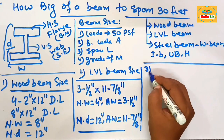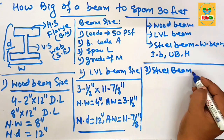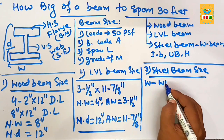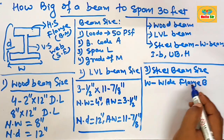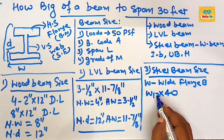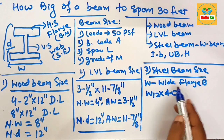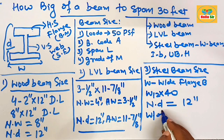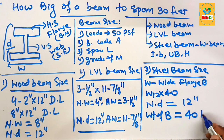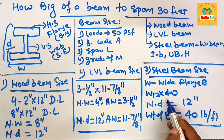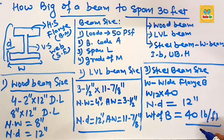For steel beam size required to span 30 feet, also known as the W beam or American wide flange beam, you can take a W12×40. The 'W' indicates wide flange beam, the '12' is the nominal depth of the steel beam at about 12 inches deep, and '40' is the weight of the beam at about 40 pounds per foot. These are the three types of beams required to span 30 feet. Thank you.